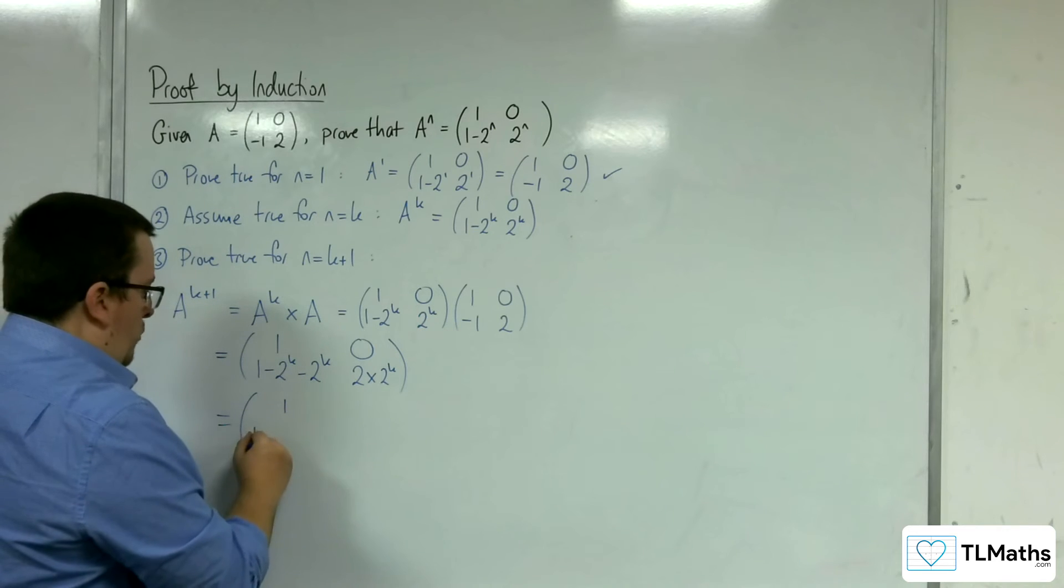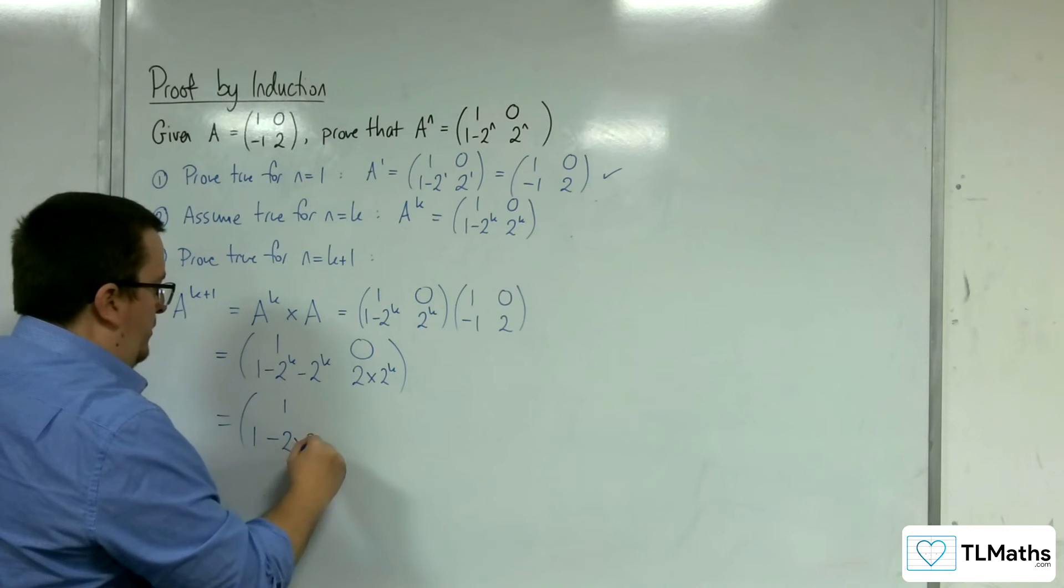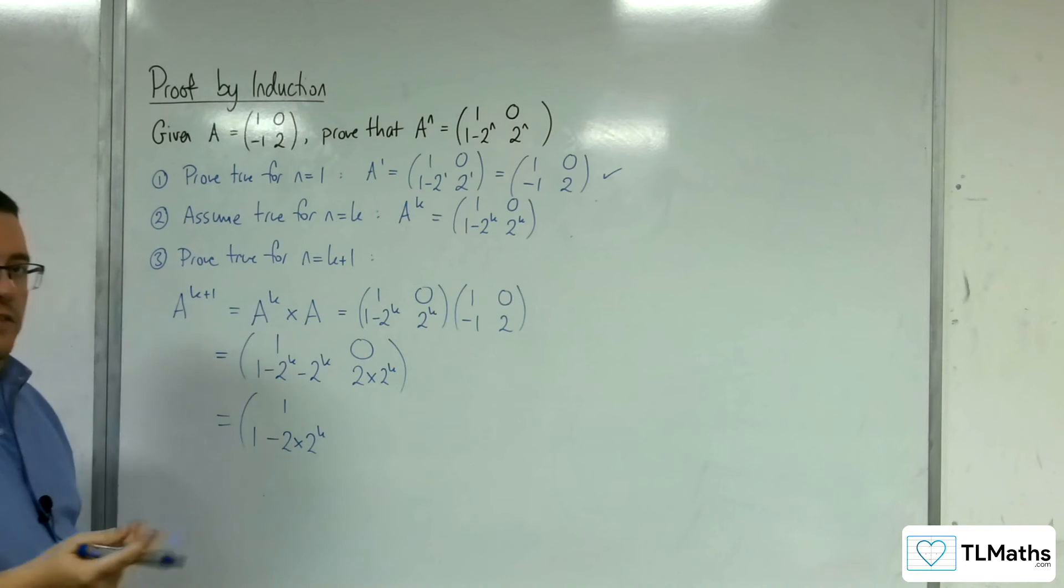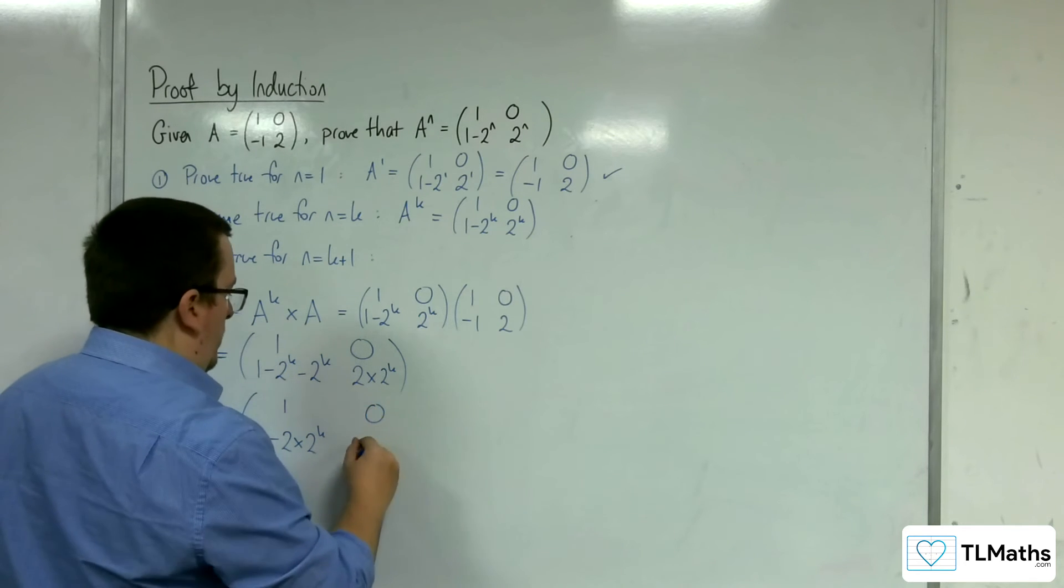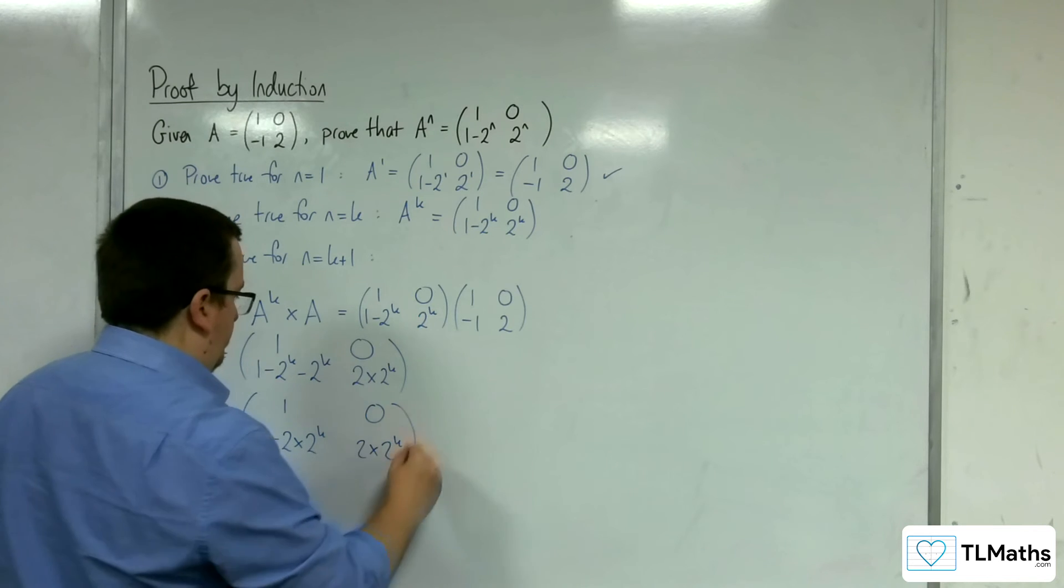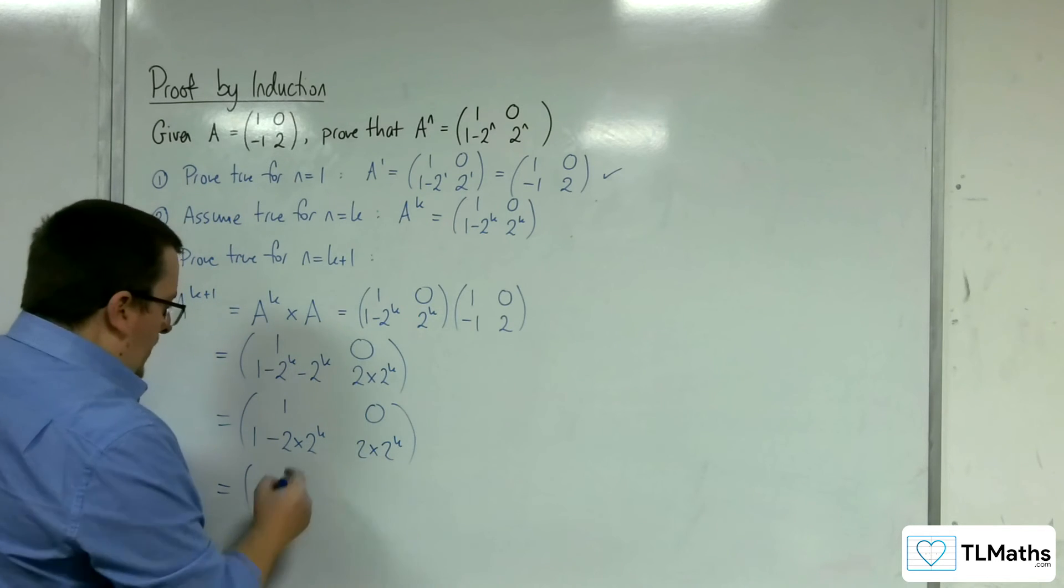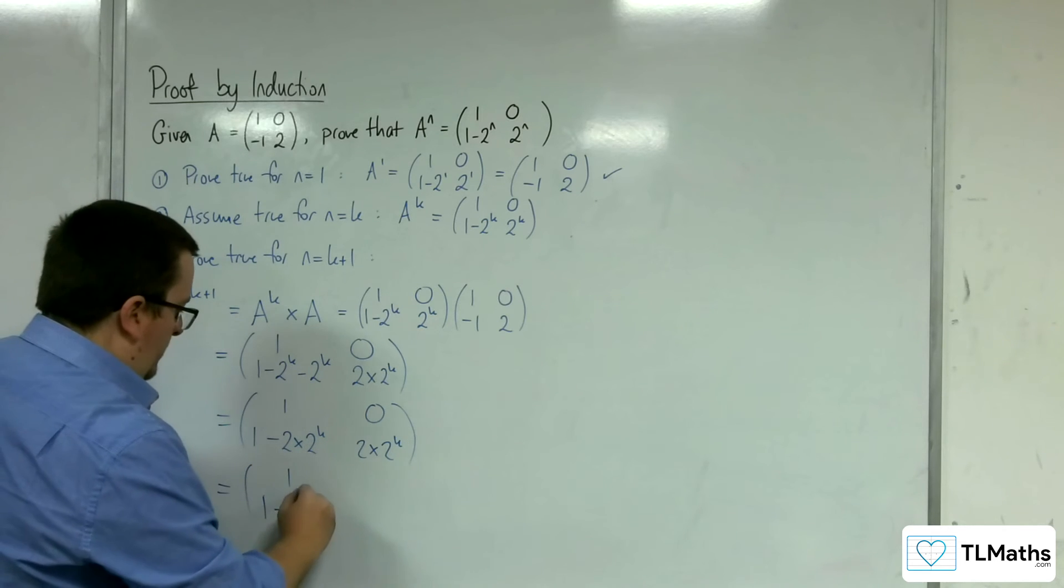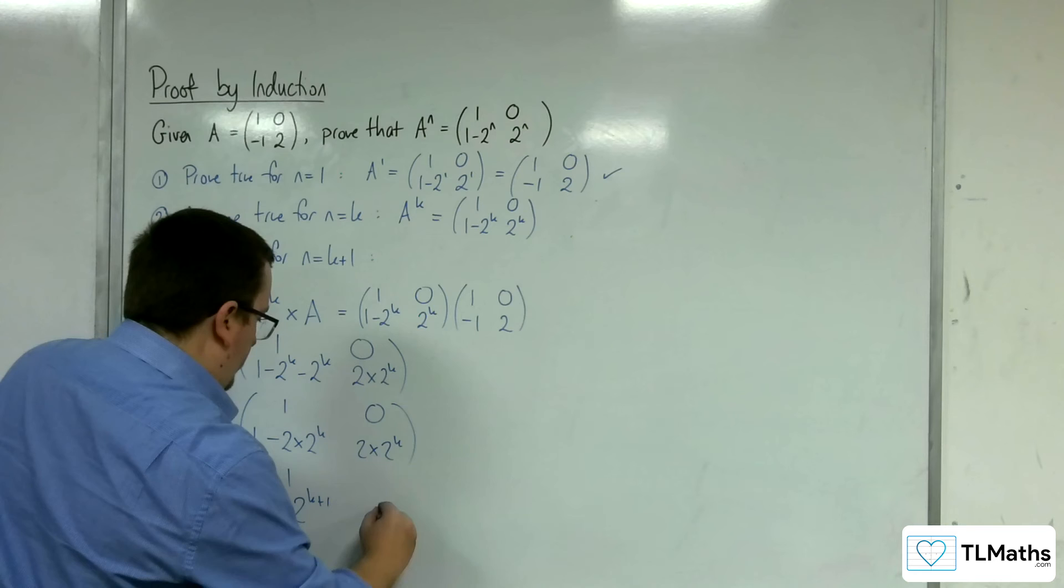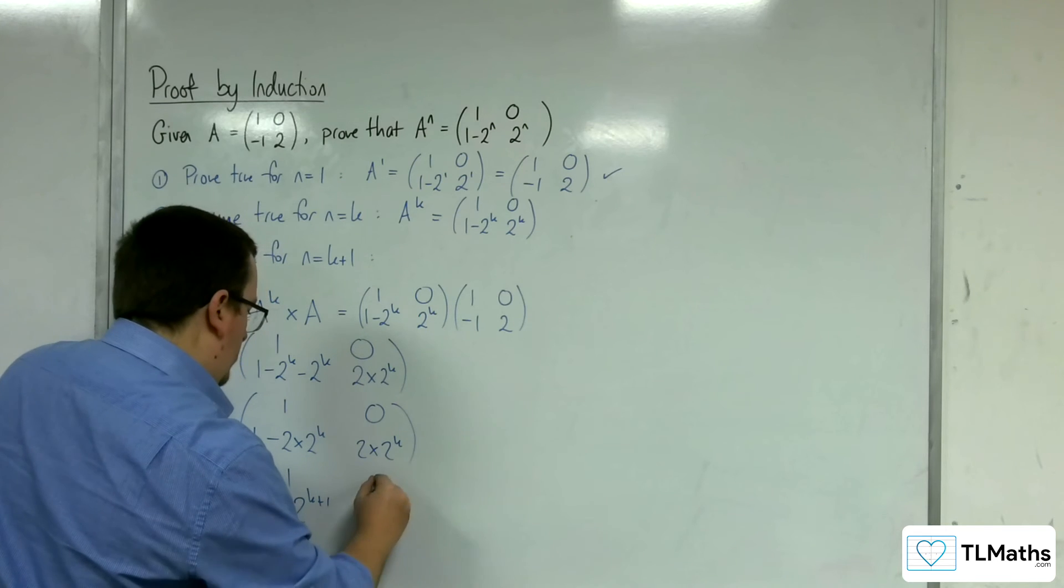So we have 1, then 1 take away 2 times 2^k, because we've got minus 2^k minus 2^k. And 0, 2 times 2^k. Now 2^1 times 2^k is 2^(k+1), so 1 take away 2^(k+1), and we've got 2^(k+1) there as well, 0.